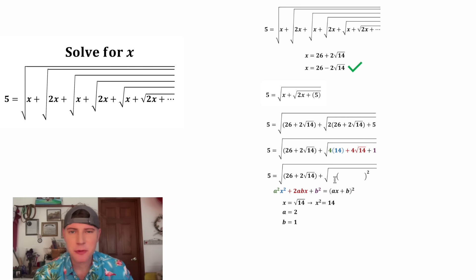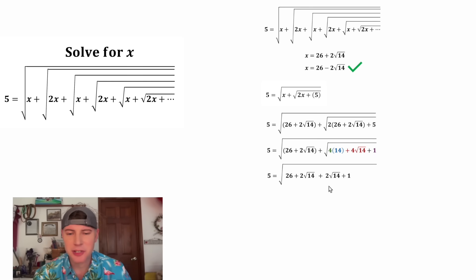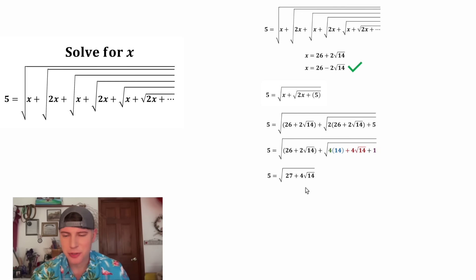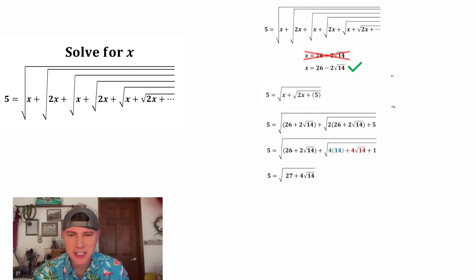Now we combine like terms: 2√14 plus 2√14 is 4√14, and 26 plus 1 is 27. So we get the square root of (27 plus 4√14), which is definitely not 5 — it has to be greater than 5. So the solution x equals 26 plus 2√14 does not work. It was an extraneous solution.